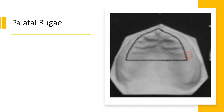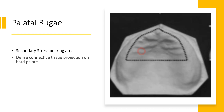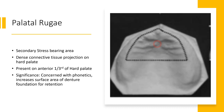The second secondary stress bearing area for the maxilla is the palatal rugae. As you can appreciate, these horizontal swellings just posterior to the maxillary central incisors are the secondary stress bearing area. These are dense connective tissue projections present on the anterior third of the hard palate. The significance of palatal rugae is that they are associated with phonetics — they help in pronouncing certain words. They also increase the surface area for retention of the denture and help to stabilize the denture foundation.